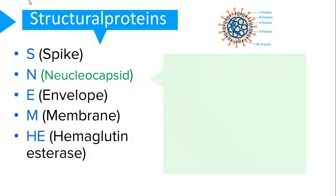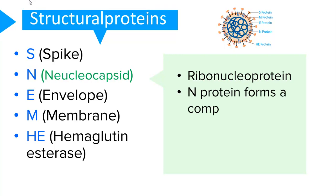The next protein is the nucleocapsid protein. This is a ribonucleoprotein which forms a complex with the ribonucleic acid to assist in viral entry.